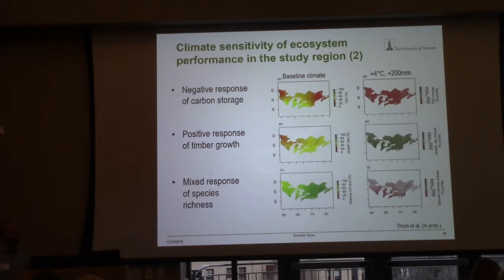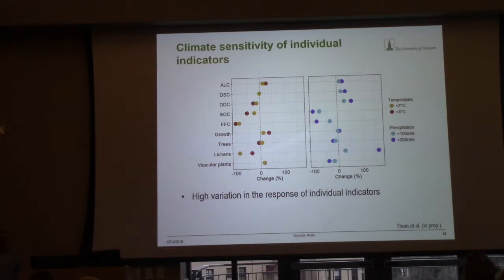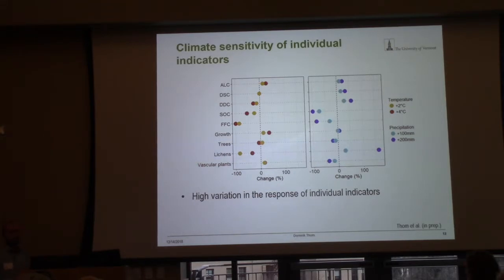Now you might think: how is that possible — carbon is decreasing but growth is increasing? If we look into each individual indicator, above-ground live carbon and growth rate are both increasing with increasing temperature and precipitation. But the thing is that soil organic carbon and forest floor carbon were highly sensitive to the changes in temperature and precipitation — that's the reason why total ecosystem carbon decreased. For the different guilds — tree species diversity, lichens, and vascular plants — we have quite mixed effects. Especially lichens reacted very strongly to changes in temperature and precipitation.